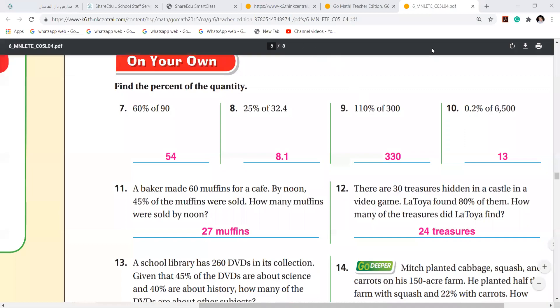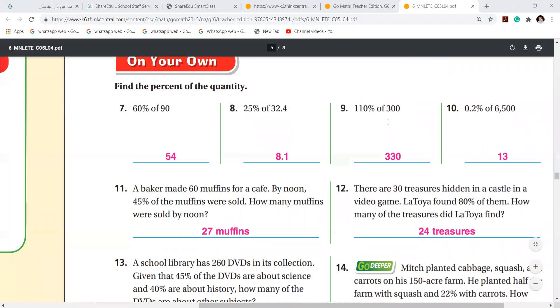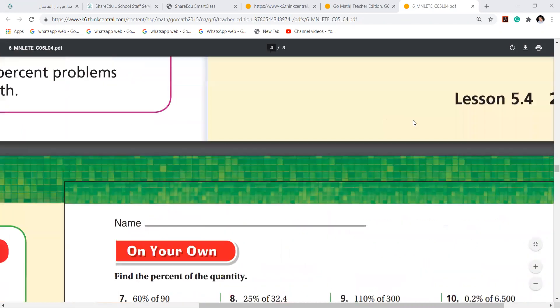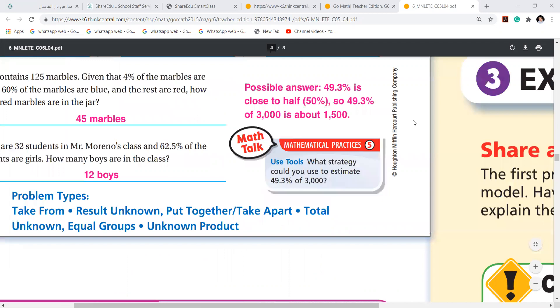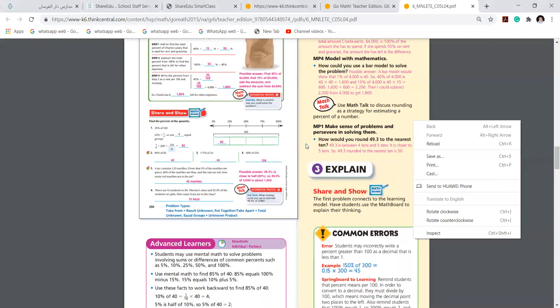Let's continue our lesson on percent as a quantity. This is lesson number 5.6, page number 290. We finished page 290, so we'll start with 291. Give me a second.